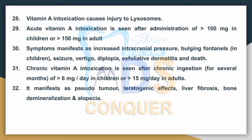Point No.28: Vitamin A intoxication causes injury to lysosomes. Acute Vitamin A intoxication is seen with administration of more than 100 mg in children or more than 150 mg in adults. It manifests as pseudotumor, teratogenic effects, liver fibrosis, bone demineralization, and alopecia.